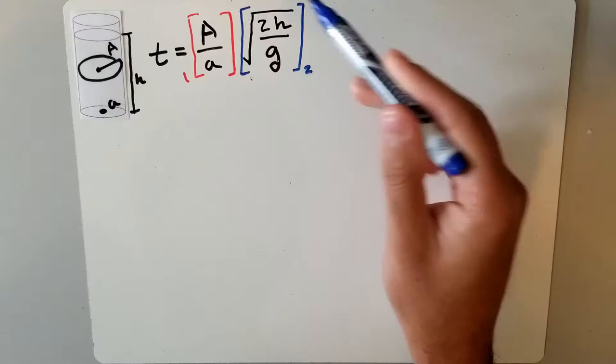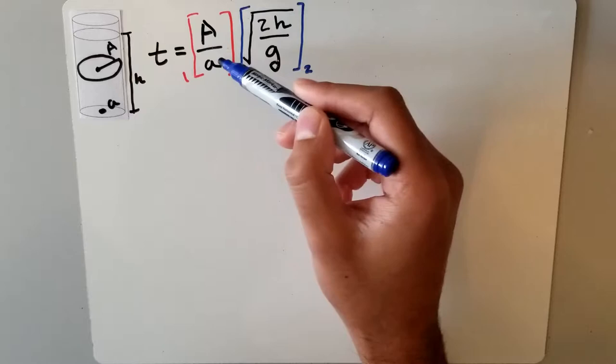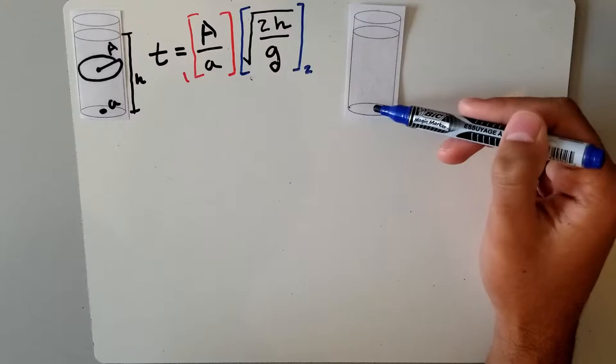To do this, we need to make A over a equal to one so we can isolate this. This gives us a situation like this, where it's basically a pipe since the bottom is completely open. Now let's think about the motion of this liquid.